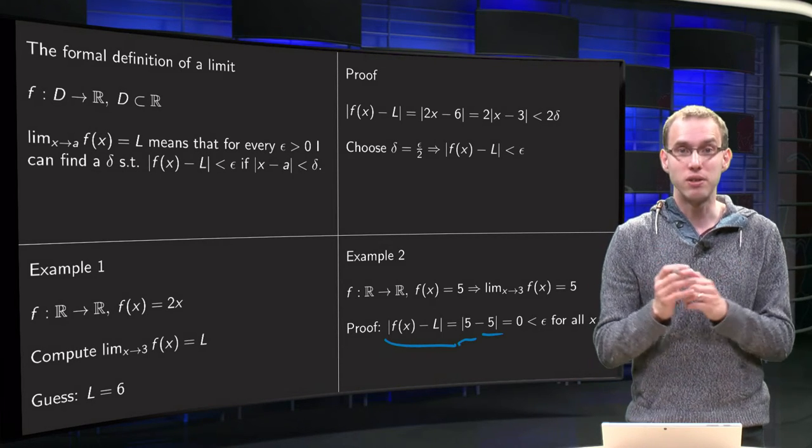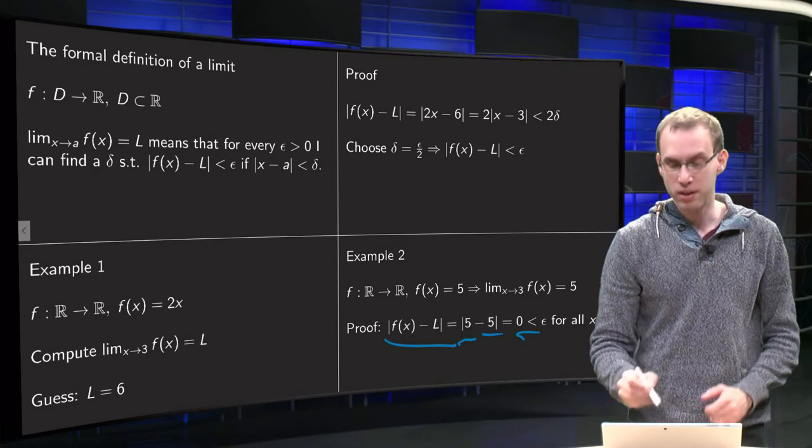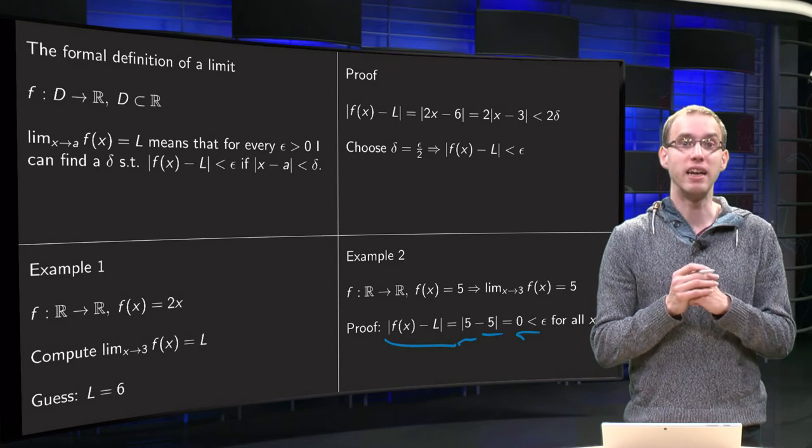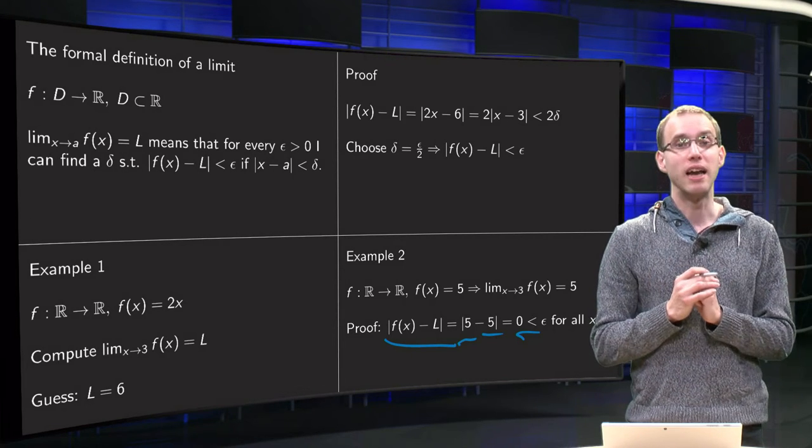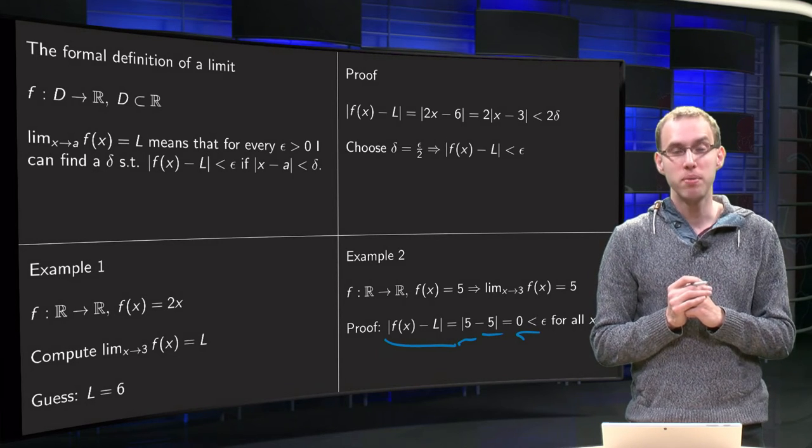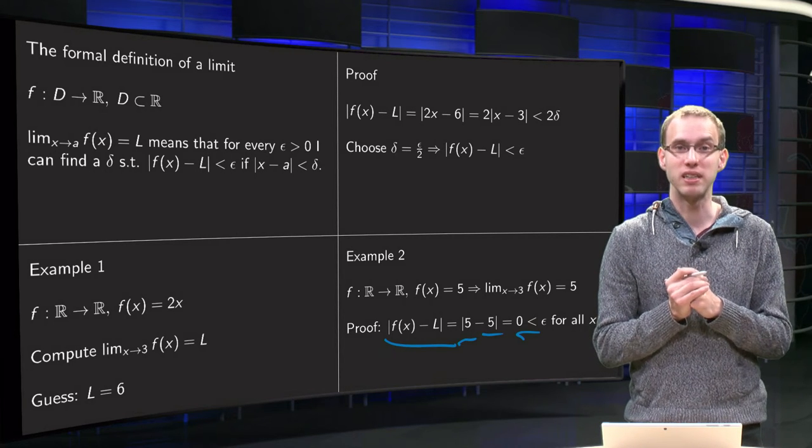And you have to get that smaller than epsilon. Well, that's smaller than epsilon for any x, so you can choose any delta you like. So here we see that our limit for x approaching 3 of f(x) equals 5, as expected.